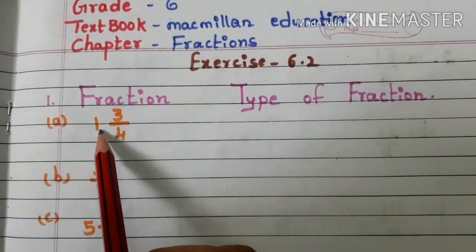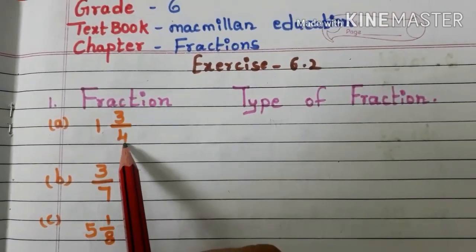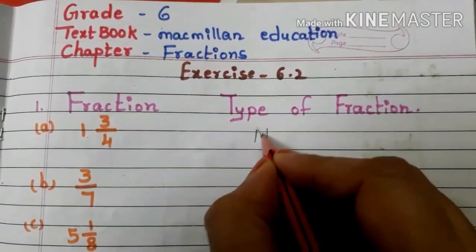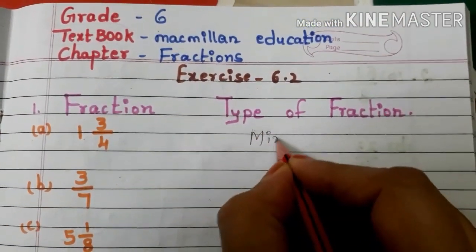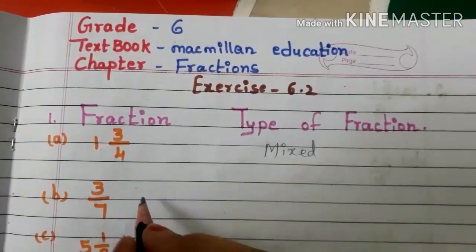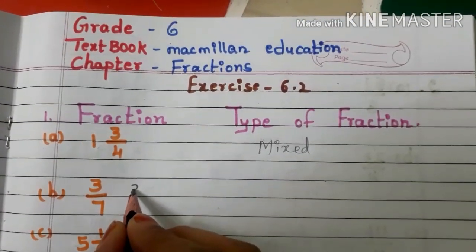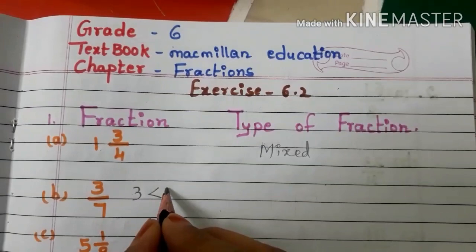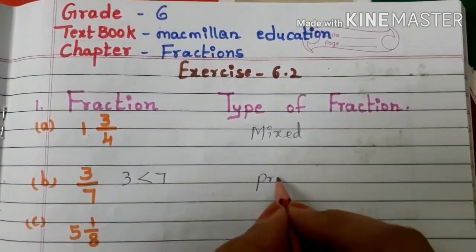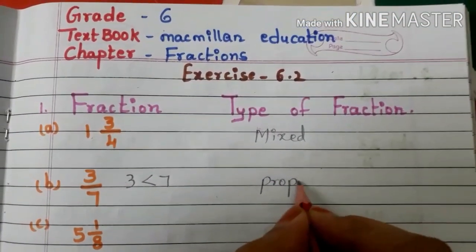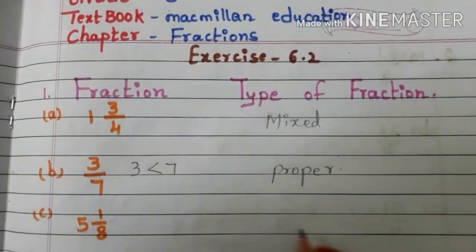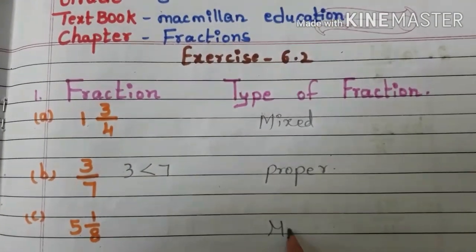Here we have A: 1 and 3/4. So this is a mixed fraction. B: 3/7. Here, numerator 3 is less than denominator 7, so this is a proper fraction. C: 5 and 1/8, so this is a mixed fraction.